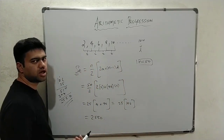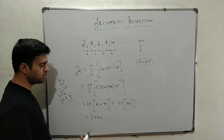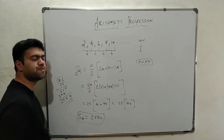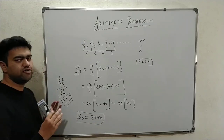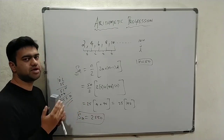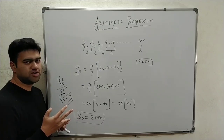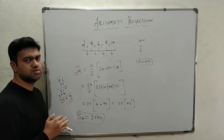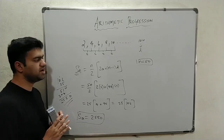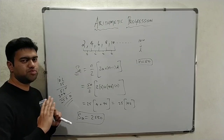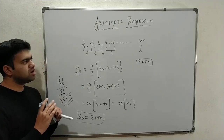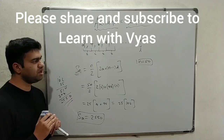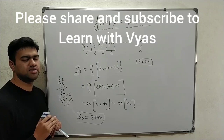So, to summarize, we have three formulas. One: nth term Tn equals a plus (n minus 1)d. Two: number of terms n equals (L minus a) divided by d plus 1. Three: summation Sn equals n by 2 into (2a plus (n minus 1)d). Using these three formulas, you can solve any arithmetic progression problem. AP is a basic concept. In this video we solved some AP examples. Thank you.